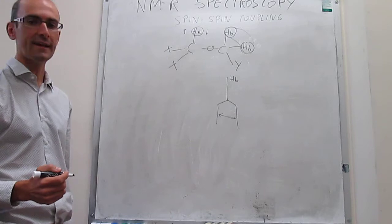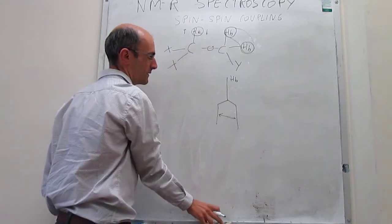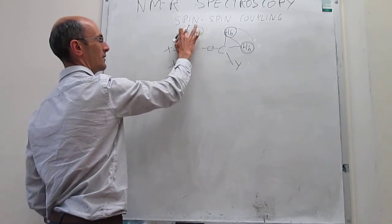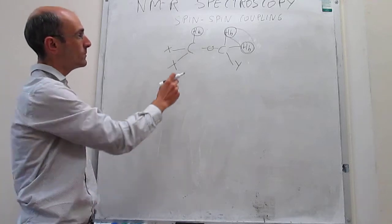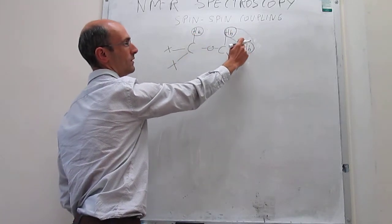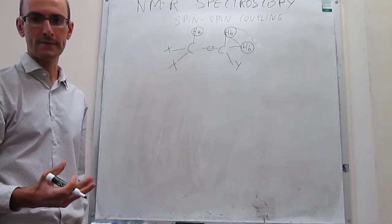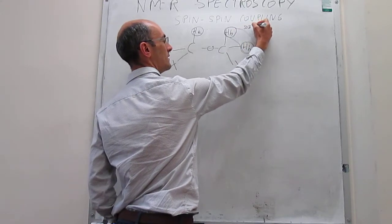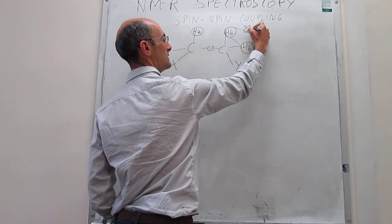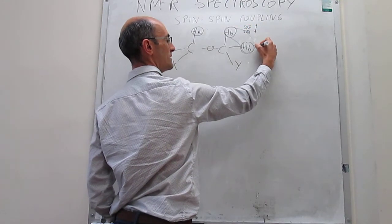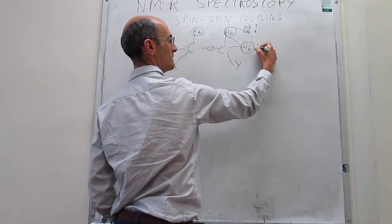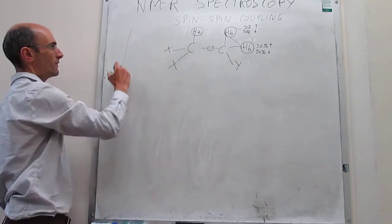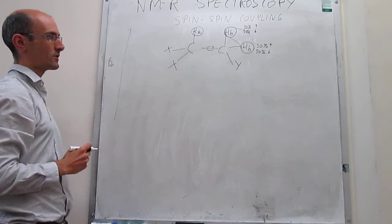Now we're going to analyze what happens with the signal of H_A. H_A can be split by two NMR-active nuclei that are within three bonds. Each H_B is going to be 50% of the time spin up and 50% of the time spin down, and the external magnetic field is pointing in this direction.